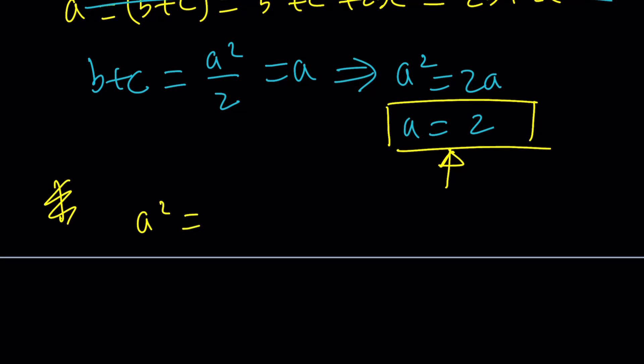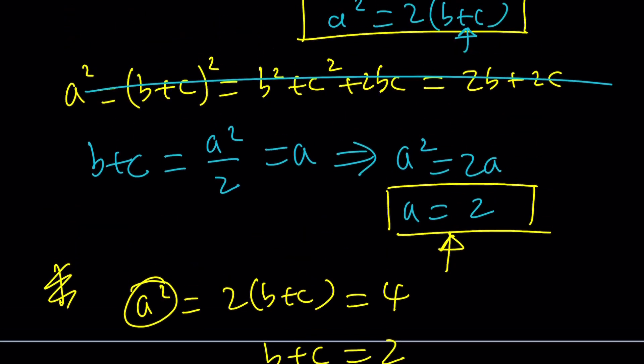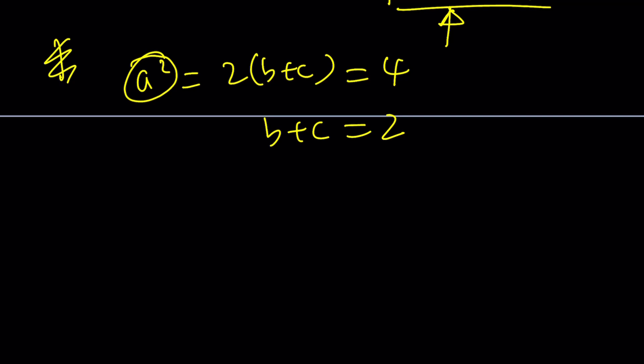What was the first equation? a squared equals 2 times b plus c. a is equal to 2, so a squared is equal to 4, which means b plus c is equal to 2. Awesome. You could also use another expression, but anyways, a is equal to b plus c, right? So, what does that mean?